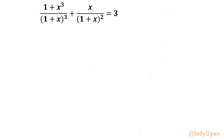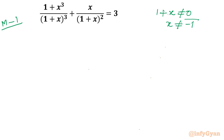Let's get started with Method 1 and the domain of the equation. As you can see, (1 + x) is in the denominator, so we can write 1 + x ≠ 0, which means x cannot be equal to negative 1.